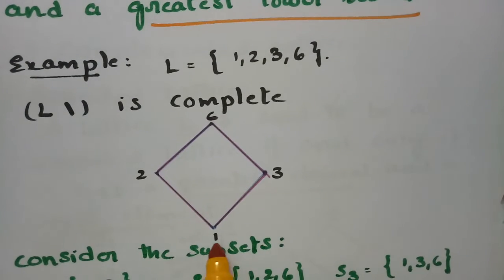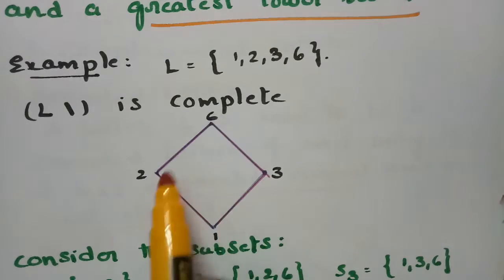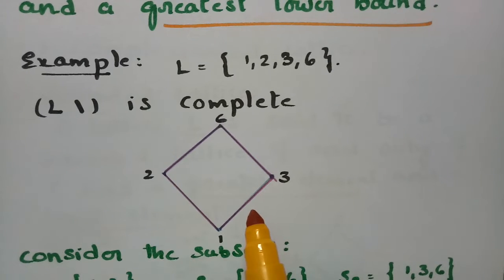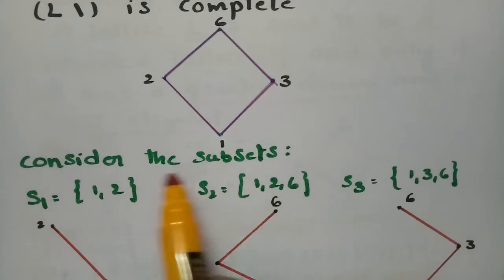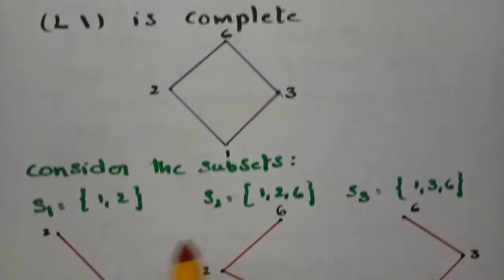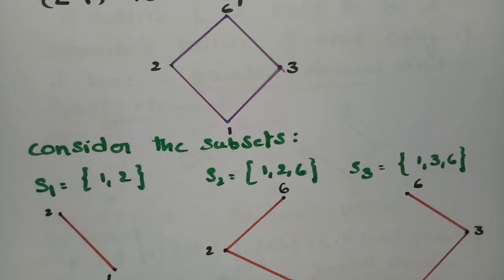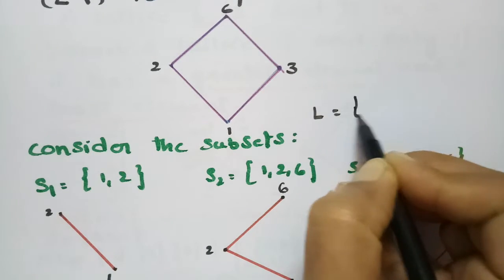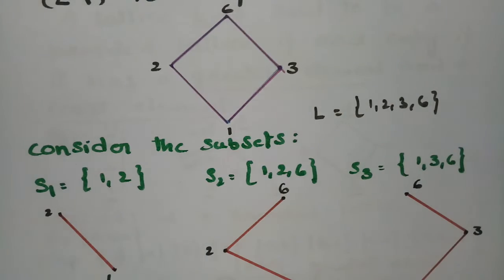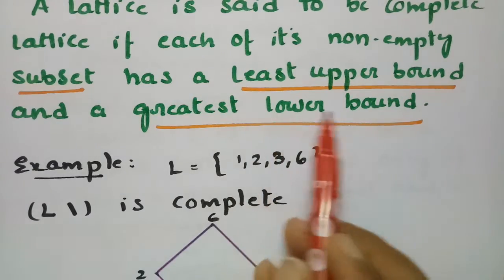The Hasse diagram shows: 1 divides 3, 1 divides 2, 2 divides 6, and 3 divides 6. To prove this is a complete lattice, we consider all subsets of L = {1, 2, 3, 6} and show each has a least upper bound and a greatest lower bound.